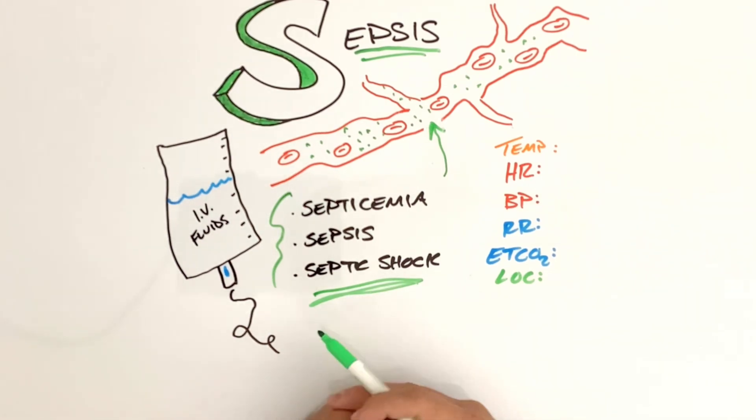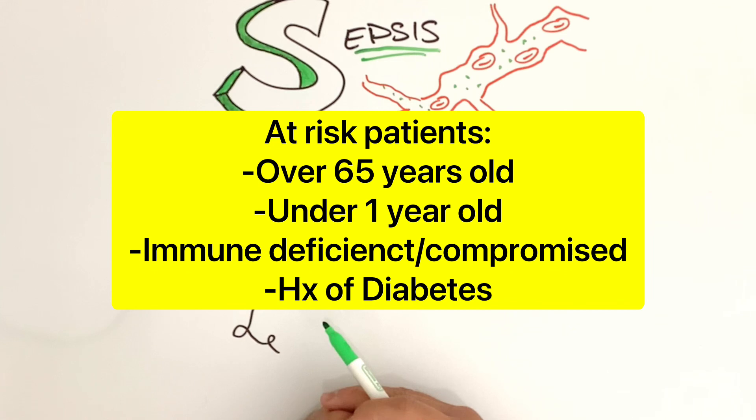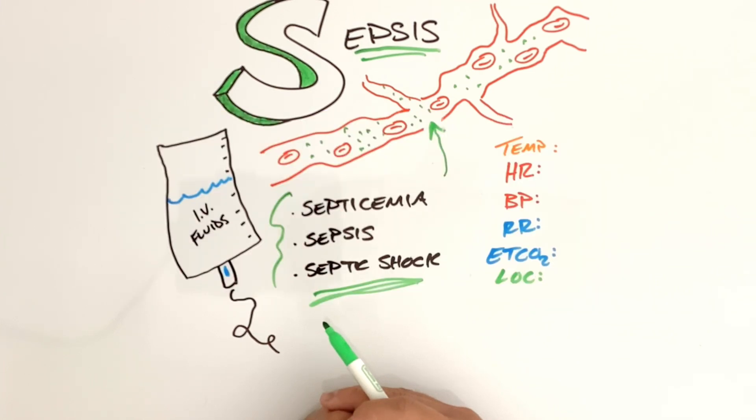So who is most at risk for sepsis and septic shock? Patients that are greater than 65 years old, under one year, or any patient that has an immune deficiency disorder or a weakened immune system, and also those with diabetes.